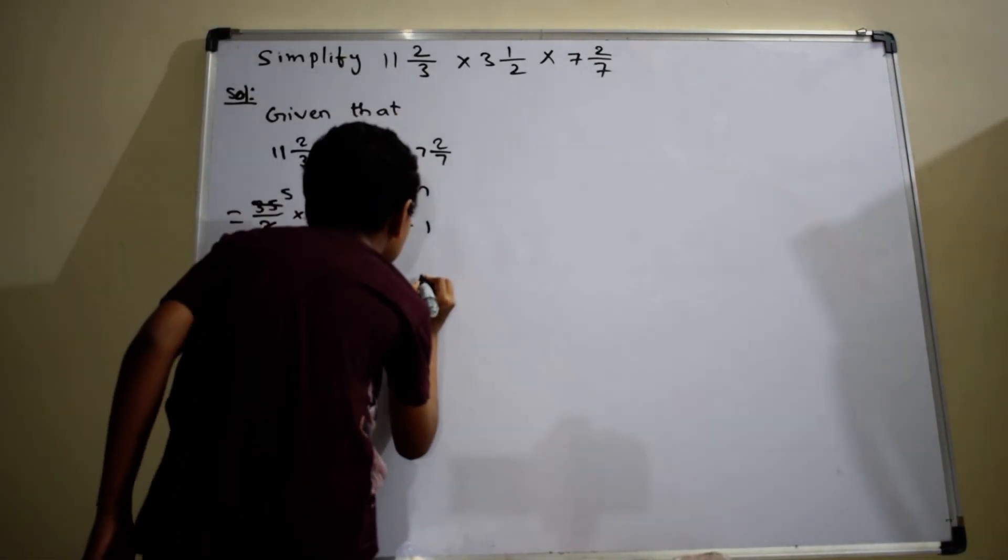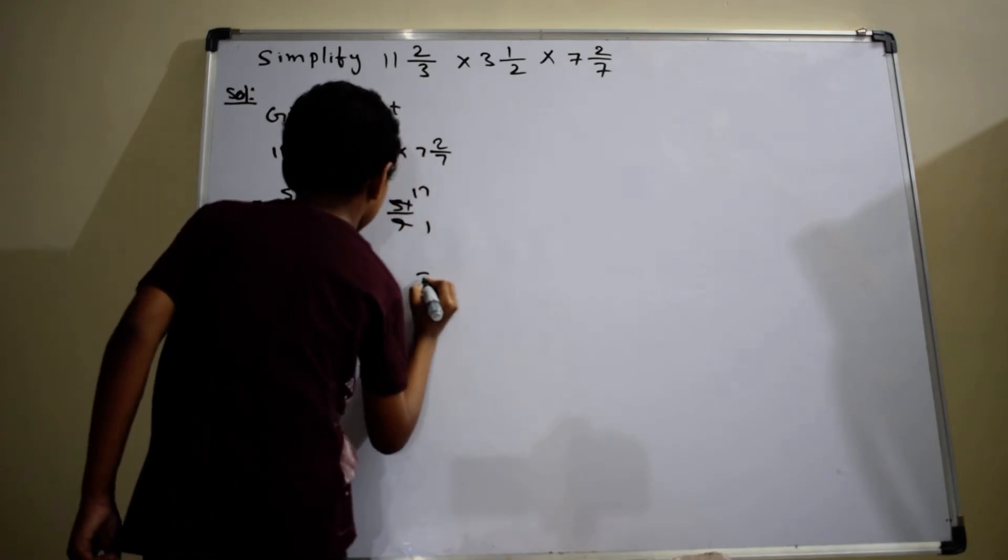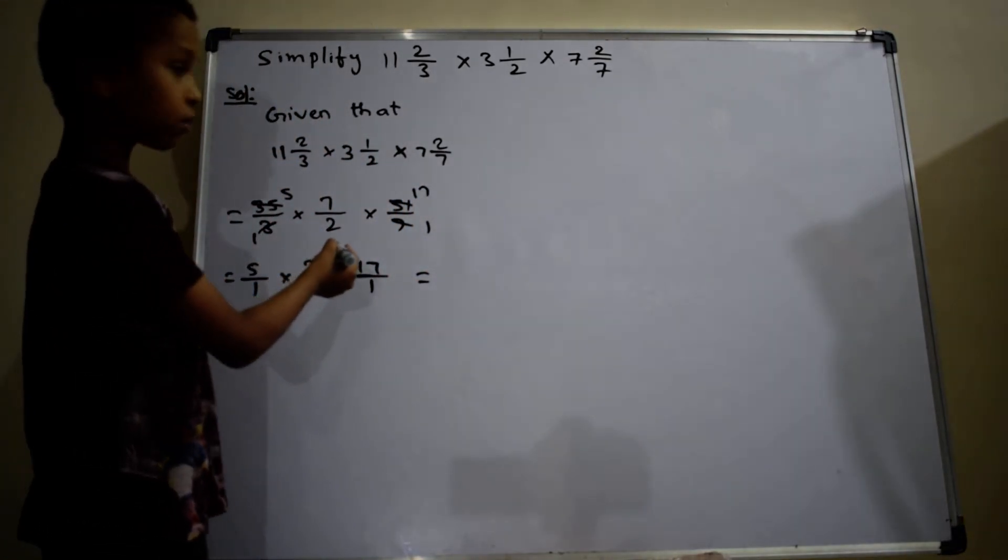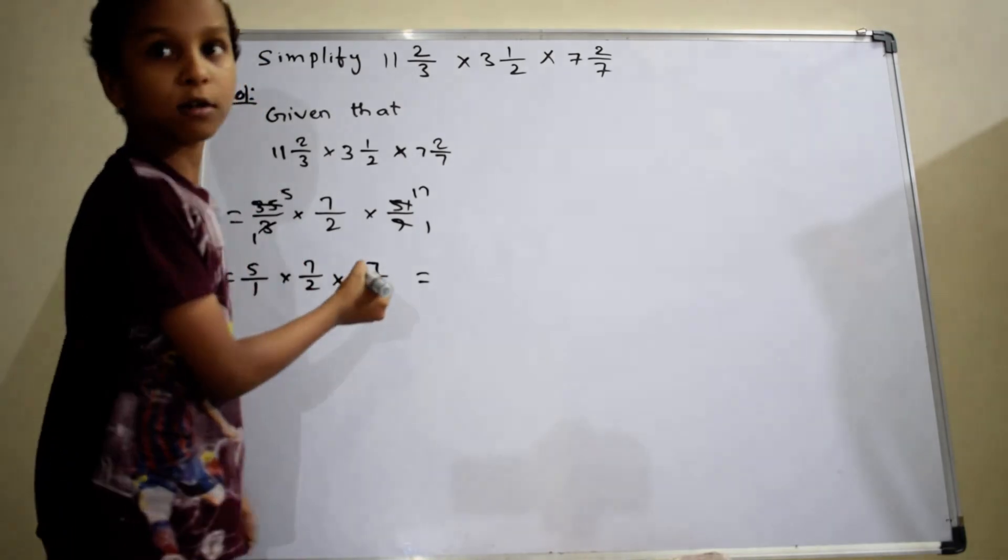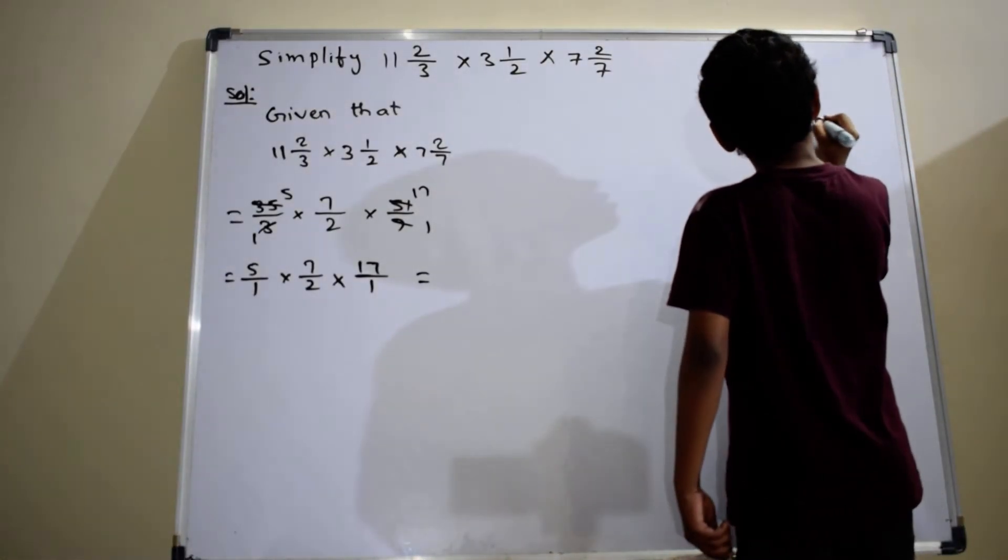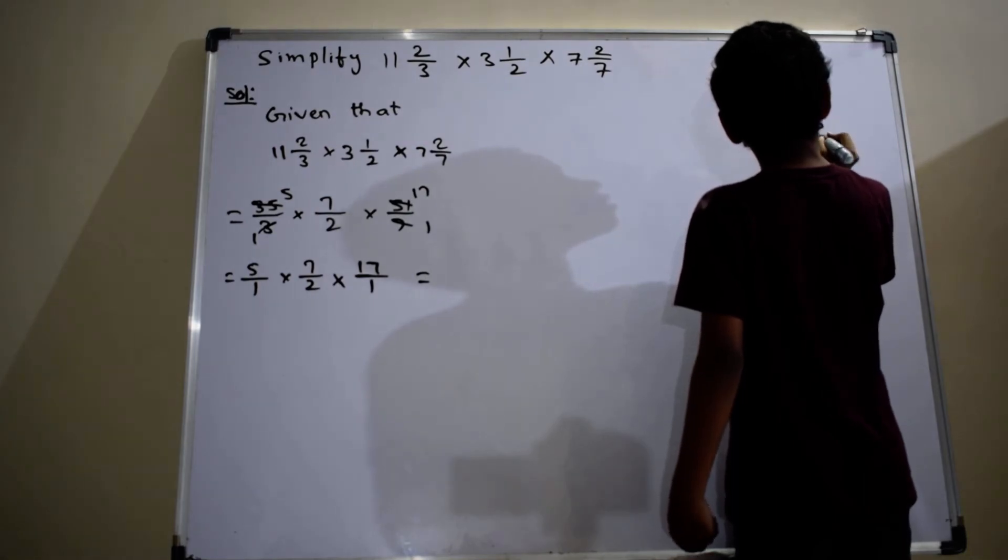This is equal to 5 into 7, 35. 35 into 17.